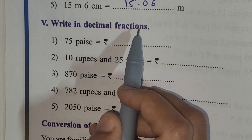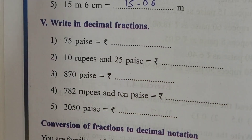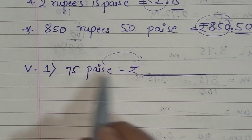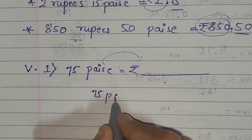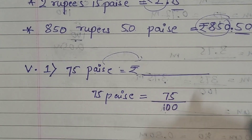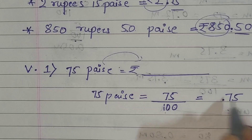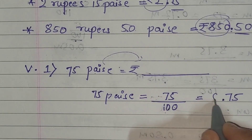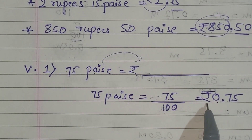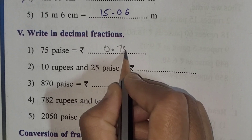Let's move to the exercise part. The fifth exercise says: write in decimal fractions. The first one: 75 paisa is equal to how many rupees? To convert paisa into rupees, 75 paisa equals 75 divided by 100. Since there are two zeros, we put the decimal point after two digits, giving us 0.75 rupees. So 75 paisa is equal to 0.75 rupees.